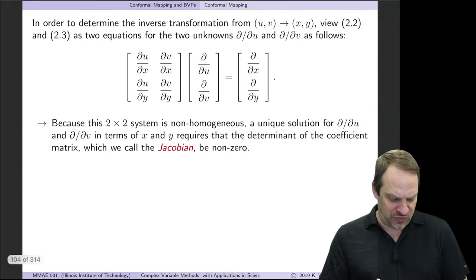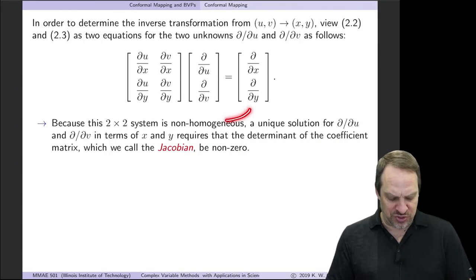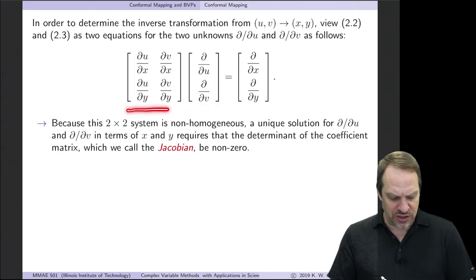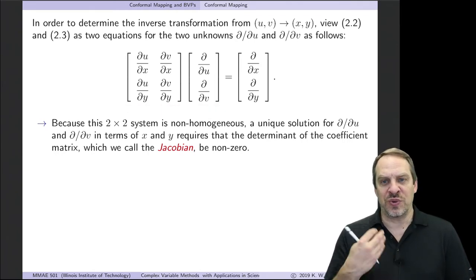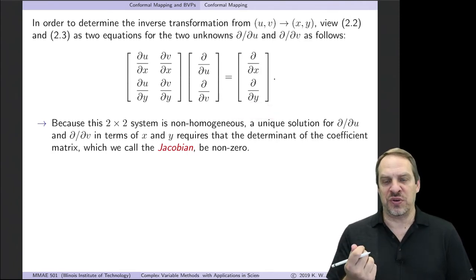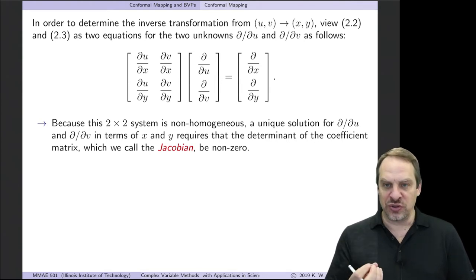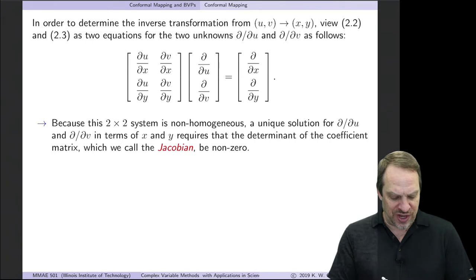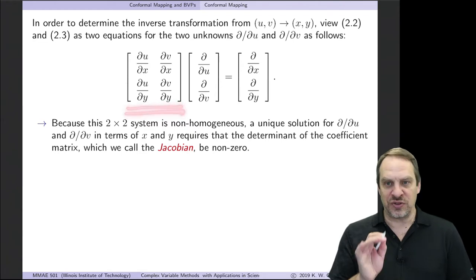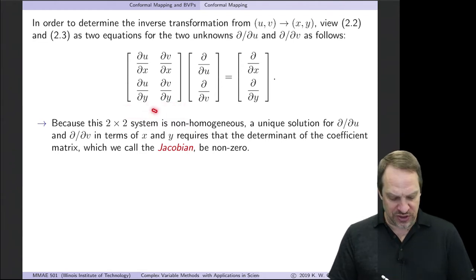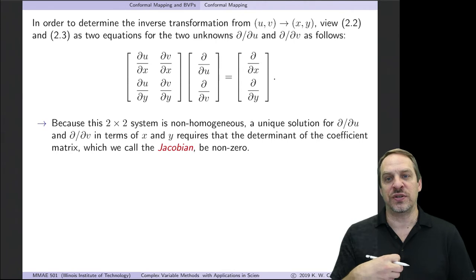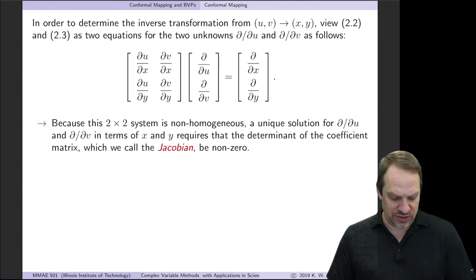We can write this in matrix form. The ∂/∂x and ∂/∂y go on the right-hand side to make it look like a normal matrix problem, with the unknowns and the two-by-two coefficient matrix. What we have is a two-by-two non-homogeneous system of equations. In order to have a unique solution, the coefficient matrix — which consists of these partial derivatives — must have a non-zero determinant. If it's non-zero, we can take the inverse and get the unique solution. I just care about the criteria for a unique solution to exist.